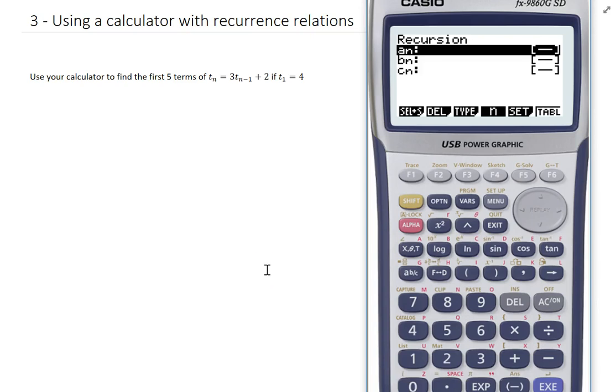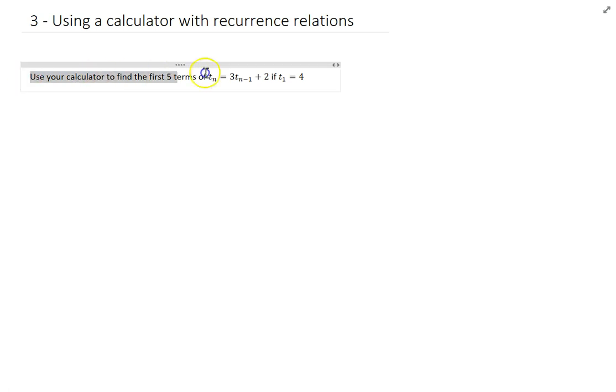So a quick video here about using your calculator with recurrence relations. So here's the question. Use your calculator to find the first five terms of T_n equals 3T_(n-1) plus 2 if term 1 is equal to 4.